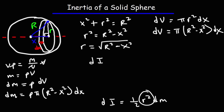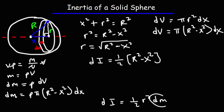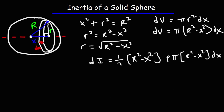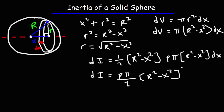Now r² can be replaced with R² − x². So this becomes one-half times (R² − x²). And dm can be replaced with what we have: ρ · π · (R² − x²) dx. So combining, we have dI = (ρπ/2)(R² − x²)² dx.